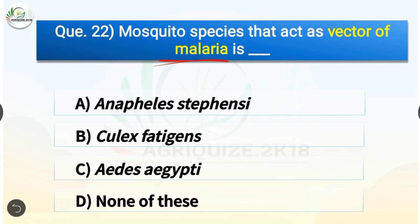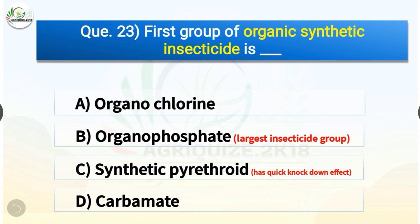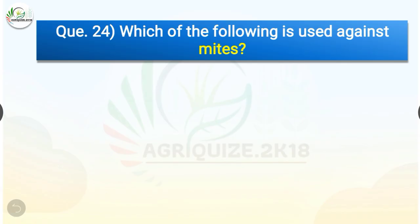Question number twenty-two: mosquito species that acts as vector of malaria is — options are Anopheles stephensi, Culex fatigans, Aedes aegypti, or none of these. The correct answer is option A, Anopheles stephensi. Question number twenty-three: the first group of organic synthetic insecticide is — options are organochlorine, organophosphate, synthetic pyrethroid, or carbamate. The correct answer is option A, organochlorine. Organophosphate is the largest insecticide group, and synthetic pyrethroid is known for its quick knockdown effect.